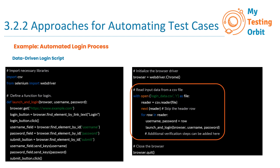The next steps are the same as in the previous example, so we skip straight to the section where we read input data from an external CSV file named 'logindata.csv'. You will notice there is an 'r' inside the open function — this specifies the mode in which the file is being opened, where 'r' stands for read mode. Next, we use csv.reader to read the data row by row. We skip the first row — the header row — using next(reader). Inside the loop, we retrieve the username and password from each row and call the 'launch_and_login' function with these values.